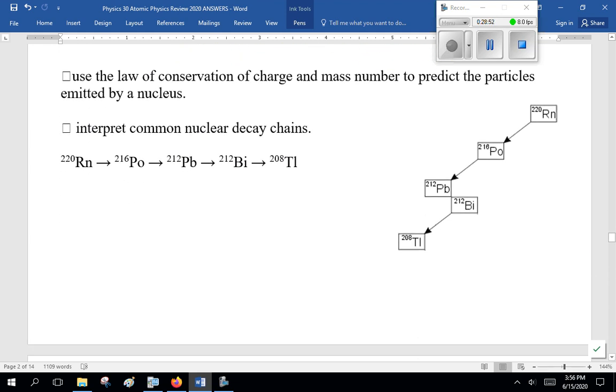Now, next thing. Use the law of conservation of charge and mass number to predict the particles emitted by a nucleus. Interpret common nuclear decay chains. Radon 220 forms polonium-216, which forms lead-212, which forms bismuth-212, which forms thallium-208. So, that's the standard decay chain. And, you see it written there on the right.